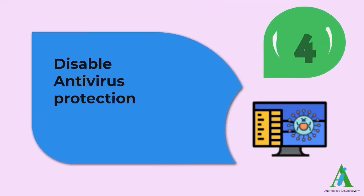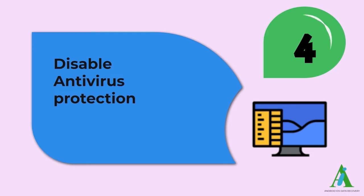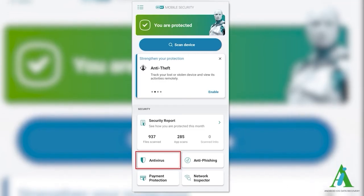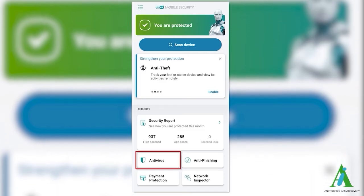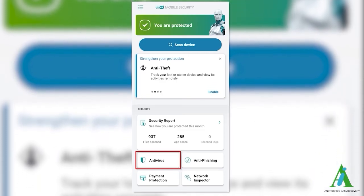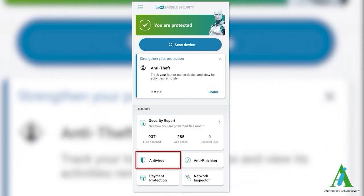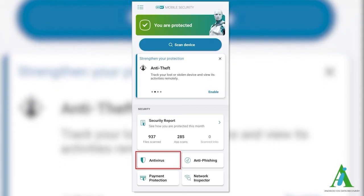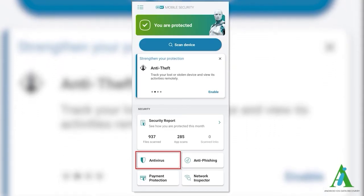Method 4: Disable antivirus protection. If you are using an antivirus on your device, an SSL connection error can pop up. In most cases it has been seen, so it's advised to turn off antivirus protection and later on enable it again.